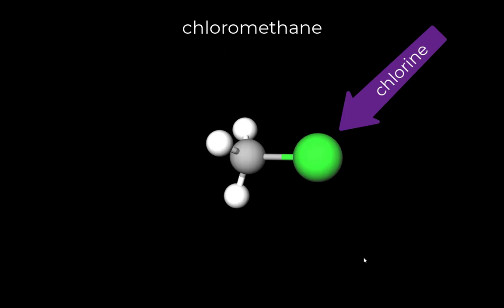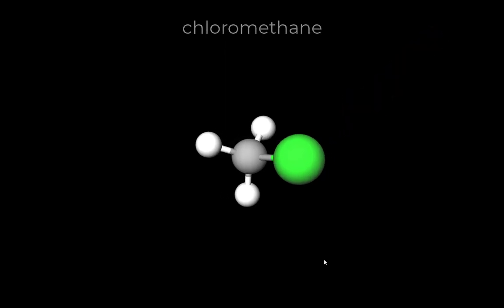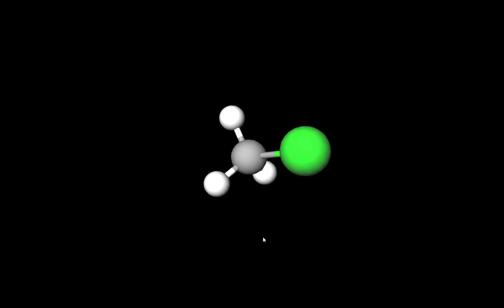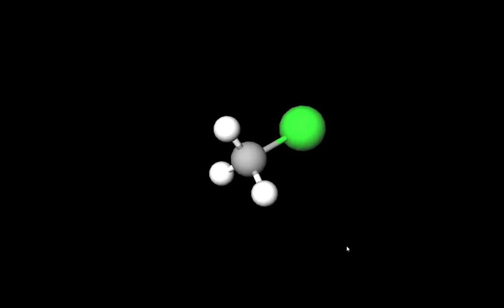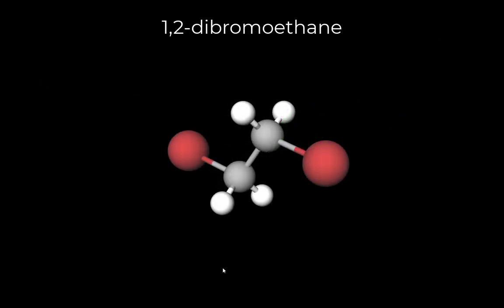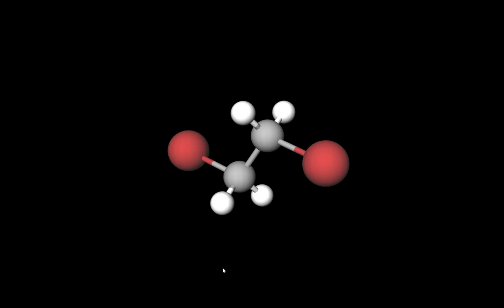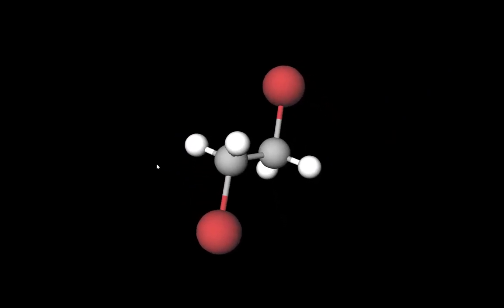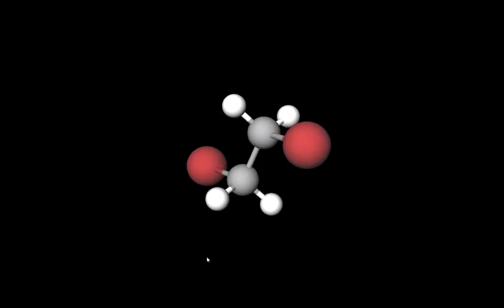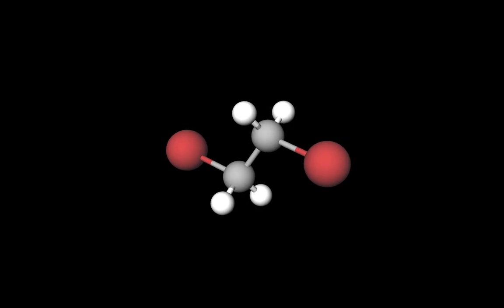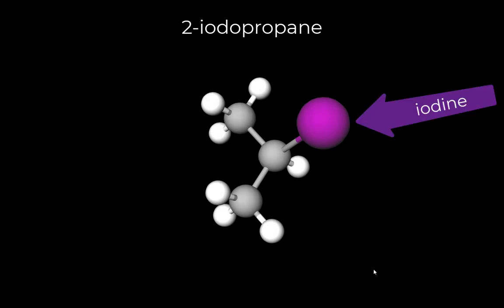Here is our first alkyl halide, chloromethane, and here we add a new sphere — green — for chlorine. We now take a look at another alkyl halide; this one is 1,2-dibromoethane, and those reddish spheres stand for the two bromine atoms. And our final molecule for this video, 2-iodopropane, with that violet sphere representing the iodine atom.